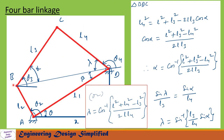Now let us look at triangle BDC. This side is L3, this is L4, and this is L. This angle is alpha and this angle is lambda. Applying the cosine rule: L4 squared equals L squared plus L3 squared minus 2·L·L3·cos(alpha). From this, alpha equals cos inverse of (L squared plus L3 squared minus L4 squared) divided by (2·L·L3). Similarly, lambda equals cos inverse of (L squared plus L4 squared minus L3 squared) divided by (2·L·L4).